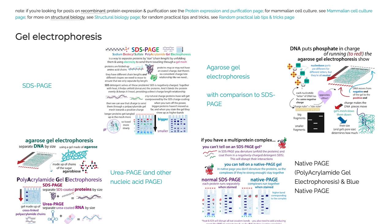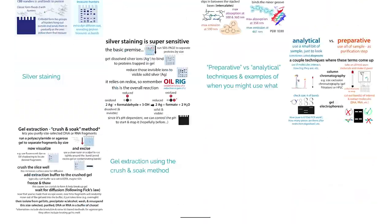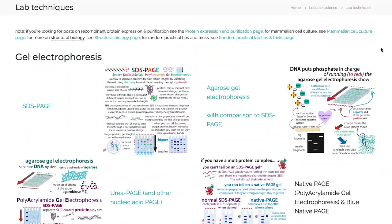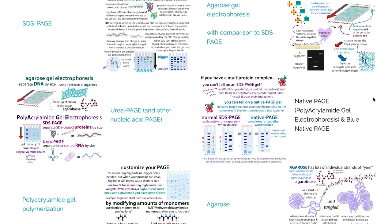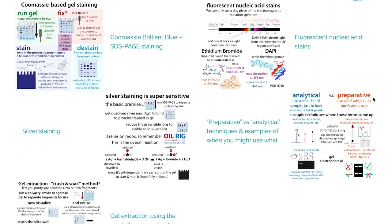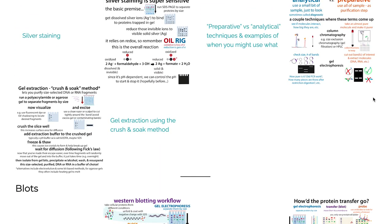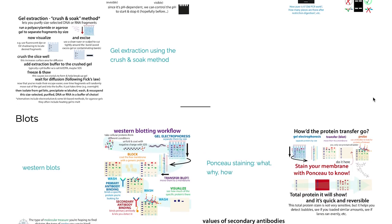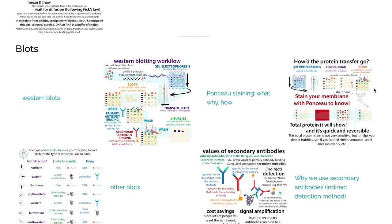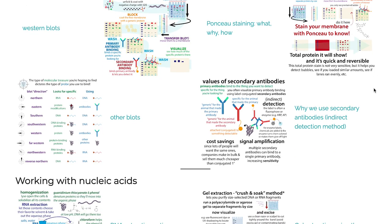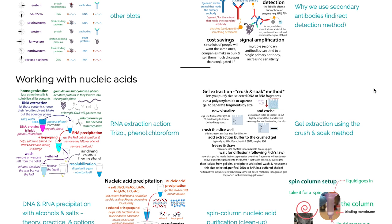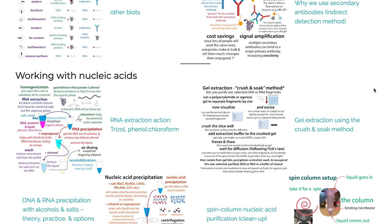We're going to go over gel electrophoresis, which is a way we can separate molecules based on size by sending them traveling through a gel. We'll talk about how we can do this for both proteins and nucleic acids — so DNA and RNA. We'll also talk about blots, which allow us to detect specific molecules as opposed to just seeing them all, and test for the presence of specific molecules after we run one of those gels.